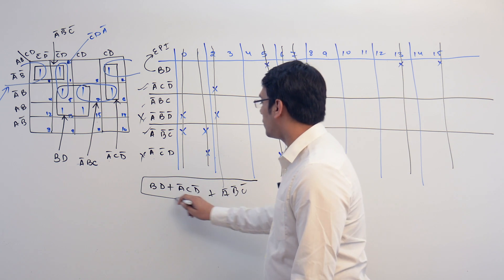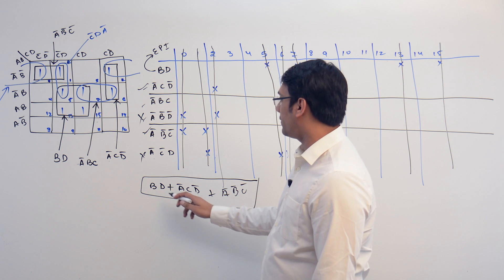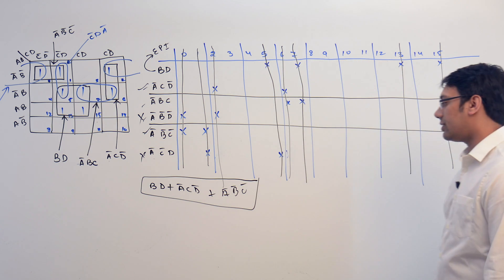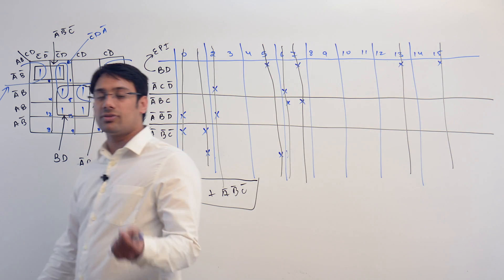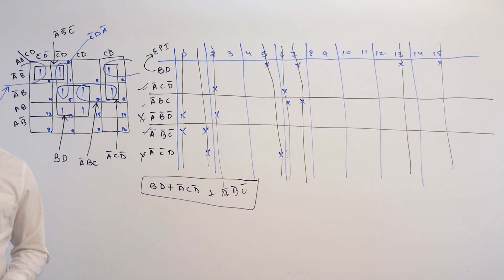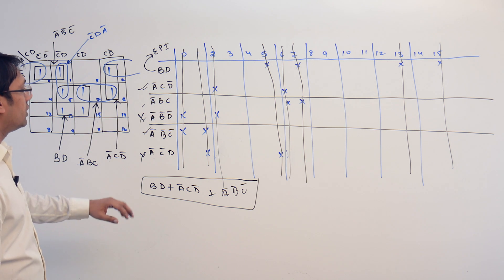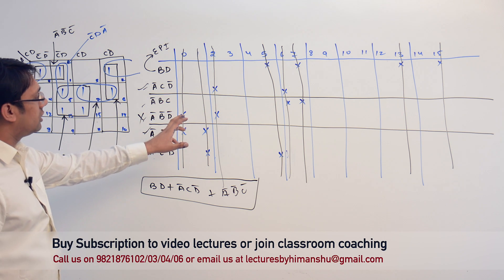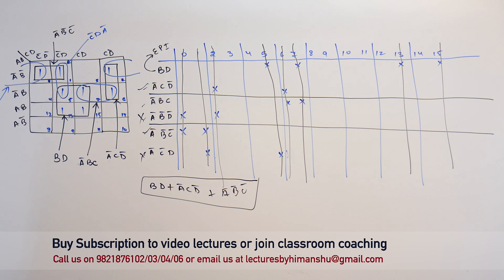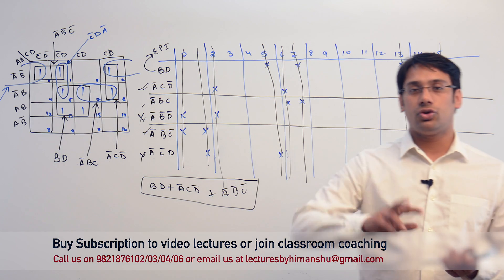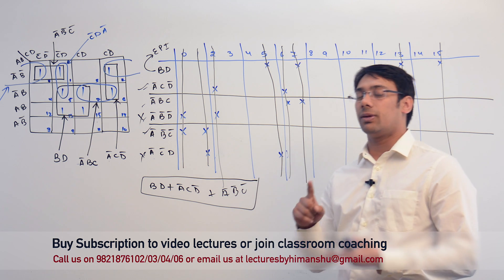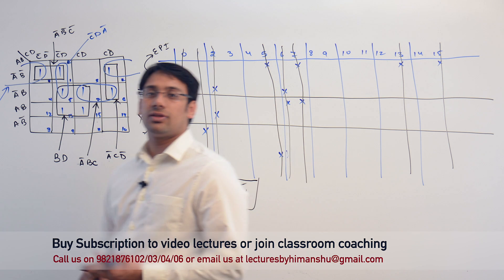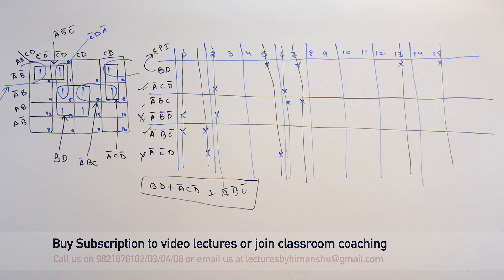This solution equation BD + A'CD' + A'B'C' is a minimized solution — it has the least number of literals and the least number of minterms. However, it is not necessary to have a unique solution for every problem; we may have more than one solution. Those multiple solutions can give two or three minimized equations, all covering a minimum number of literals and minterms while still representing the same function.